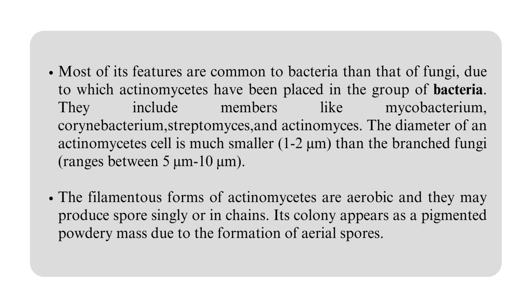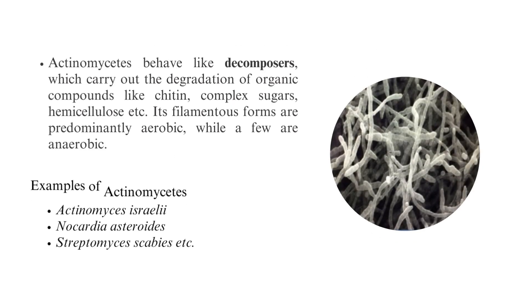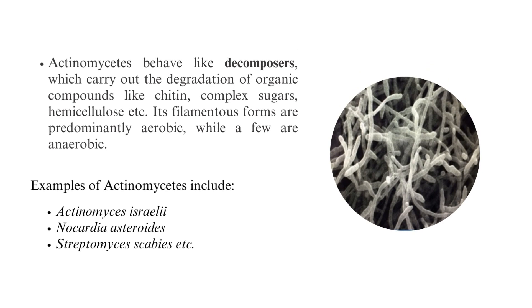The diameter of an actinomycete cell is much smaller than that of branched fungi. The filamentous forms are aerobic and may produce spores singly or in chains. Their colony appears as a pigmented powdery mass due to the formation of aerial spores. Actinomycetes behave like decomposers, carrying out degradation of organic compounds like chitin, complex sugars, and hemicellulose.